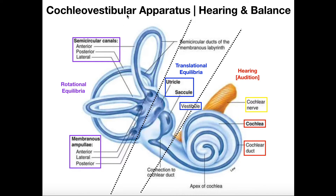All of this right here is the vestibule. The vestibule has two subparts: the utricle and the saccule. These are the individual otolithic organs that deal with detecting changes in translational equilibrium. The saccule is the one closest to the cochlea, while the utricle is closest to the loops, which are referred to collectively as semicircular canals. The utricle and saccule are subparts of the vestibule and they respond to changes in translational equilibrium.